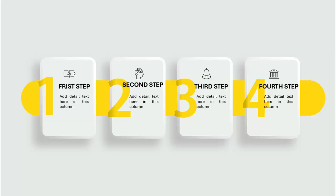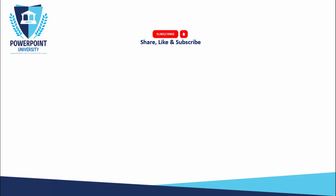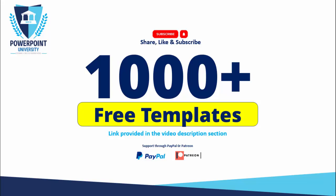In today's tutorial I'm going to show you how to create this four-step infographic slide in PowerPoint. I've added one gold color stripe at the back side, the option number with gold color, icons for the first step, and detailed text. You can add up to four steps or increase/decrease them as needed. Please share, like, and subscribe — my channel on YouTube offers 1000+ free templates absolutely free, with links in the video description. You can also support my channel through PayPal or Patreon.